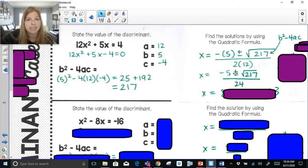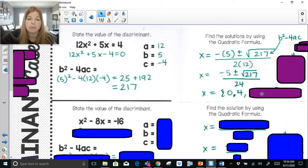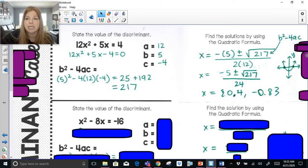I use the plus sign to get my first solution and the minus sign to get my second solution. Using my calculator, rounding to the 10th place, negative 5 plus the square root of 217 divided by 24 is 0.4, and negative 5 minus the square root of 217 divided by 24 is about negative 0.8. If I was to graph this equation on the coordinate plane, it would cross the x-axis in two places at 0.4 and negative 0.8.